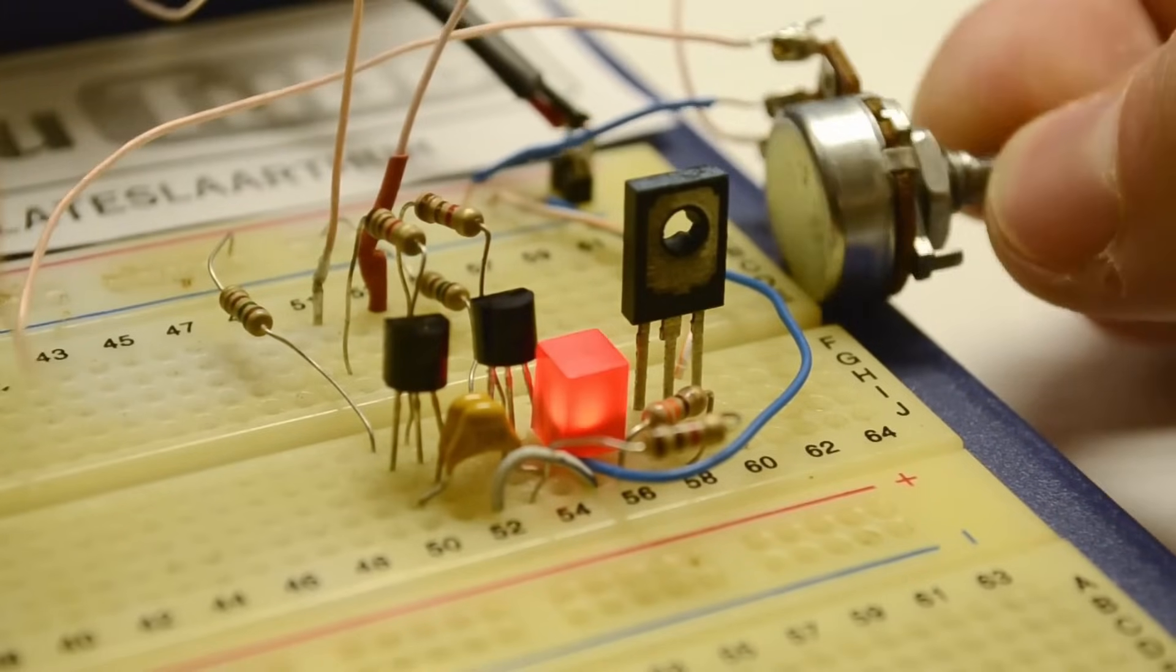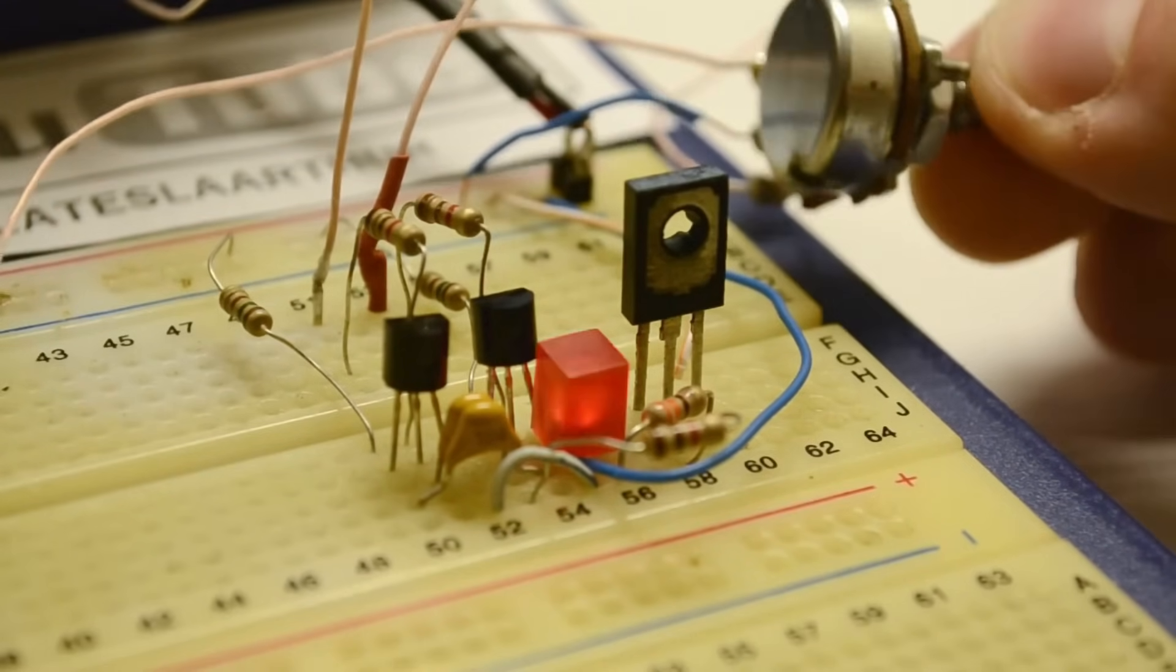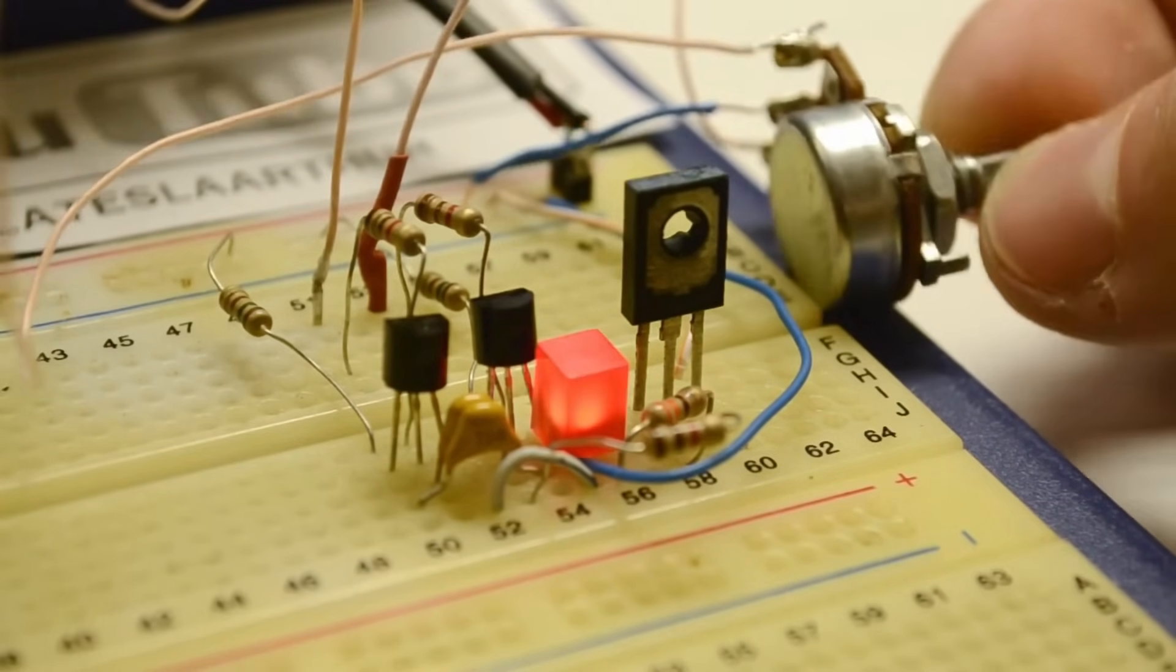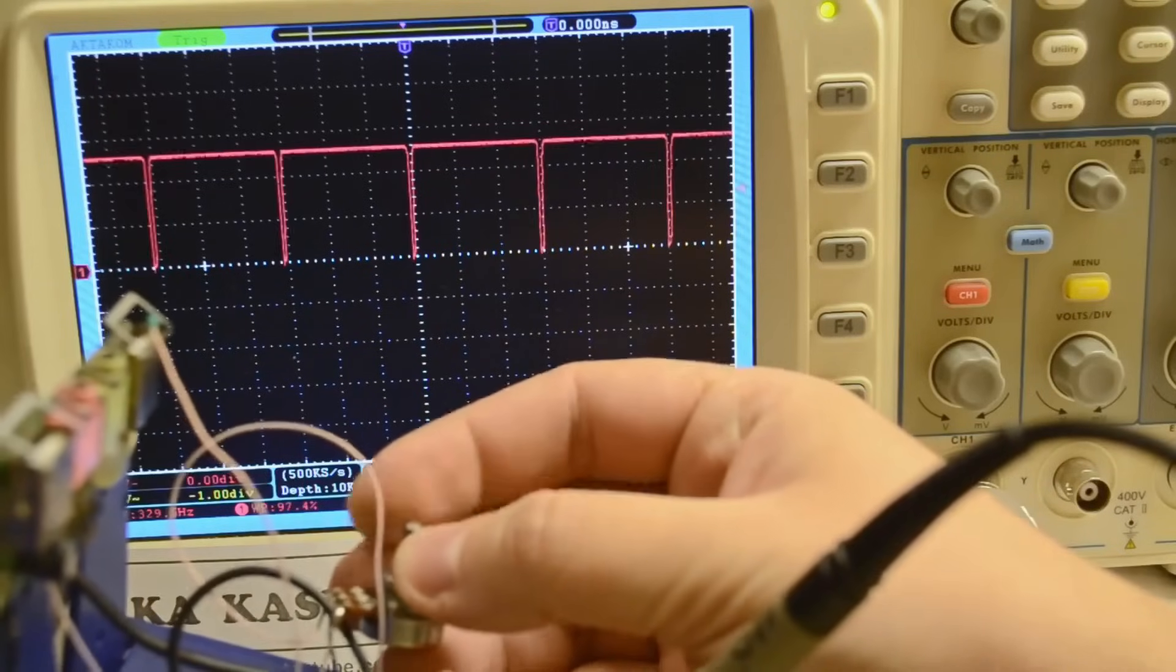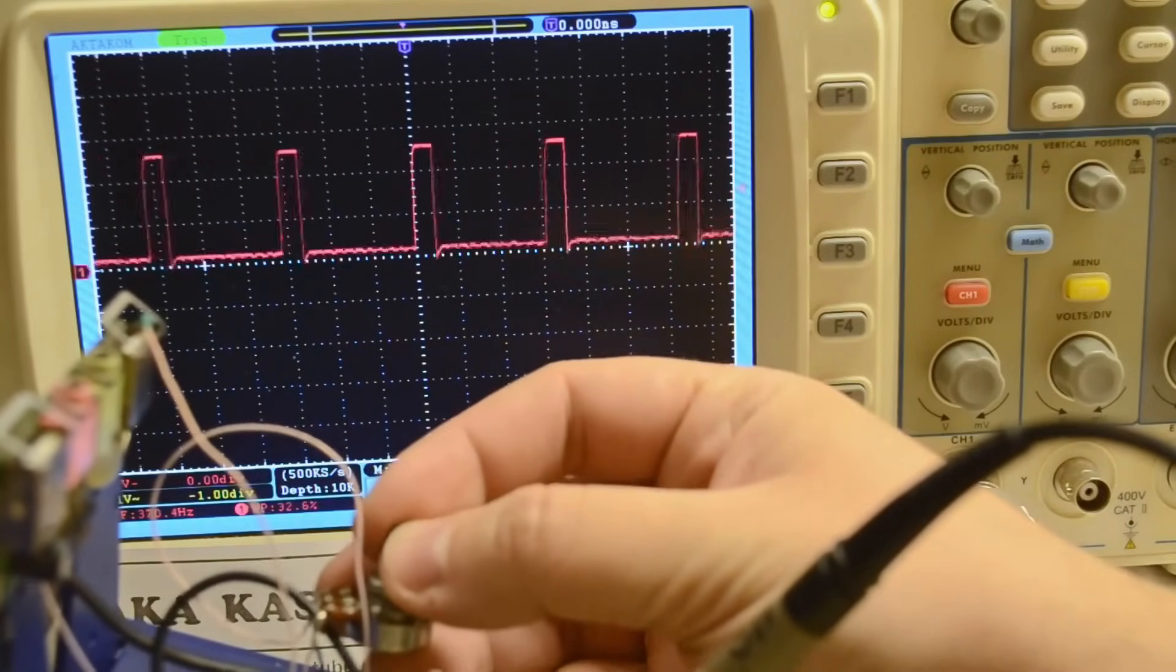If we place a potentiometer at this point, we can smoothly adjust the duty cycle of the PWM signal, that is, the ratio of the signal period to the time Tau0. Why won't the frequency change? Because by decreasing R2, we will increase R3 by the same amount. And consequently, the sum of Tau0 and Tau1 will remain constant with some margin of error.